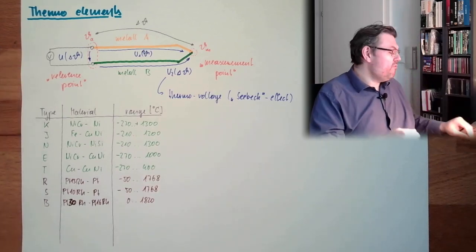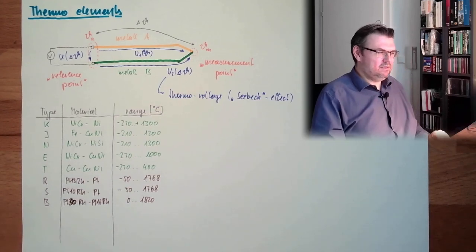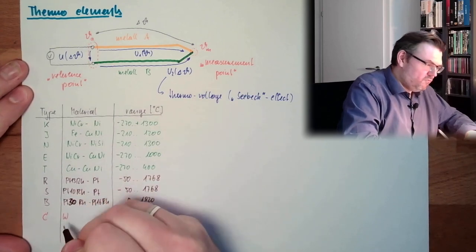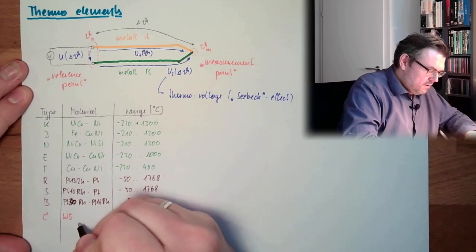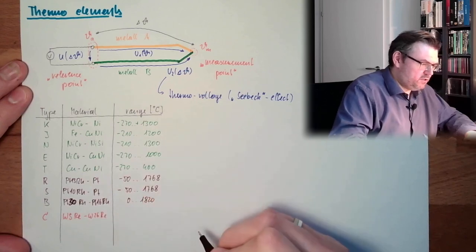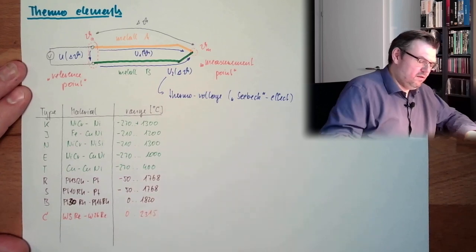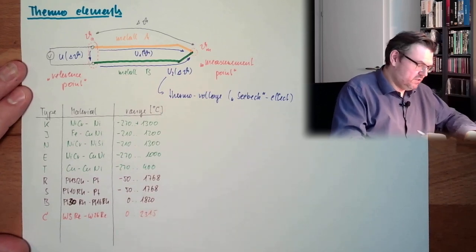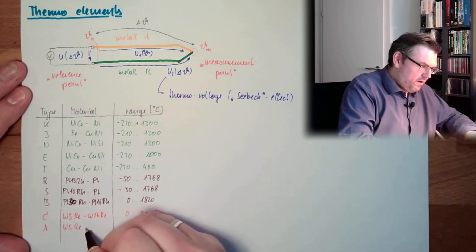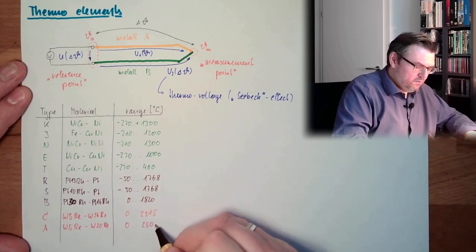And whenever we have really high temperatures, then usually tungsten is somewhere around. So this is type C. This is tungsten, Wolfram is tungsten, rhenium. And this is defined from 0 to 2315 degrees Celsius. Here we measure really high temperatures. And there is also type A, which is tungsten 5 rhenium, tungsten 20 rhenium. This from 0 to 2500.